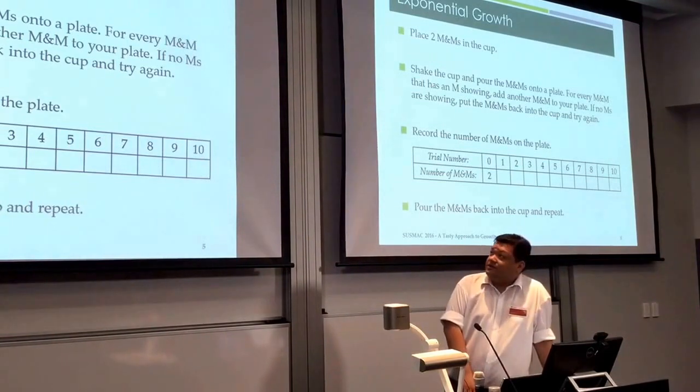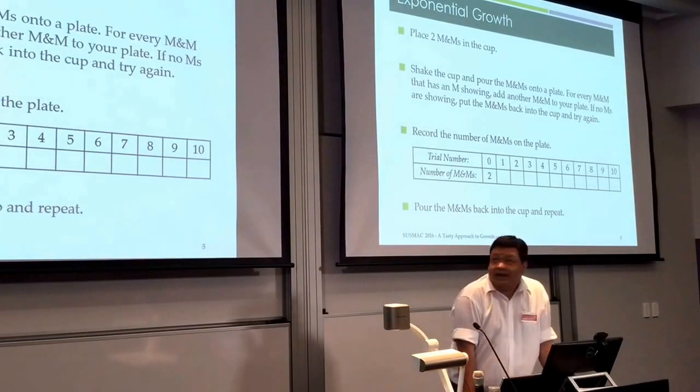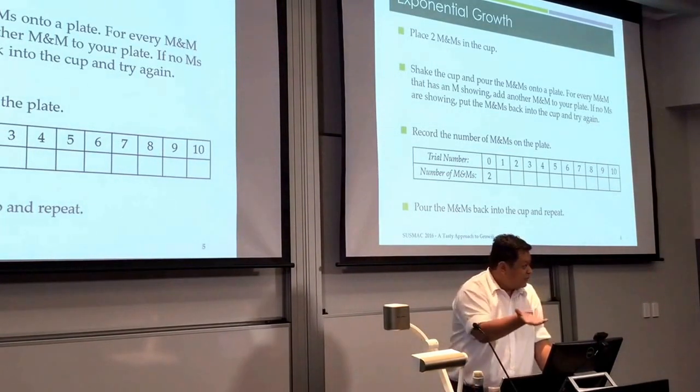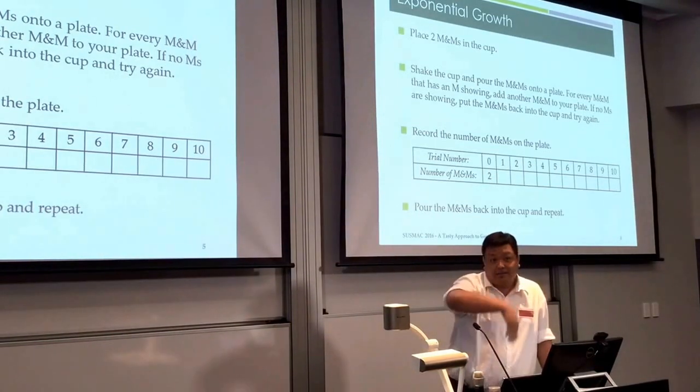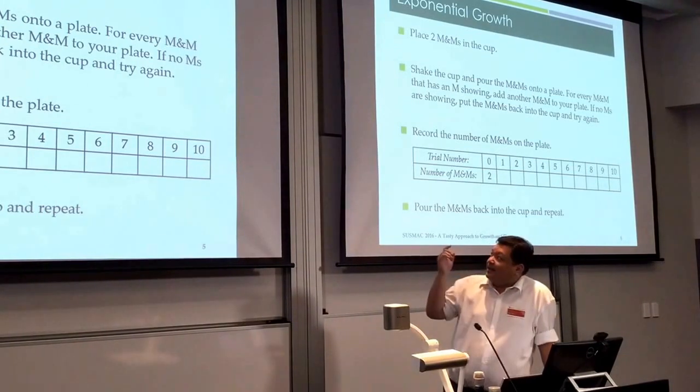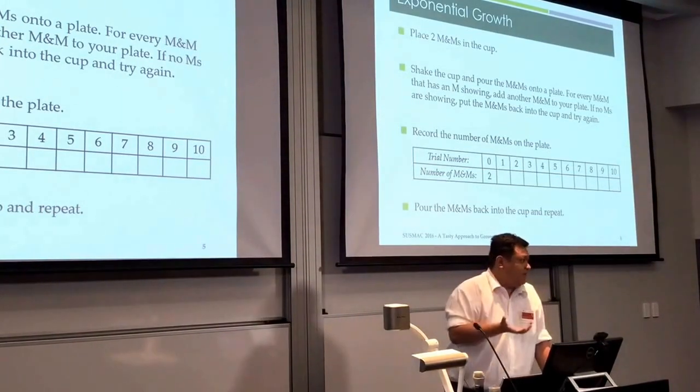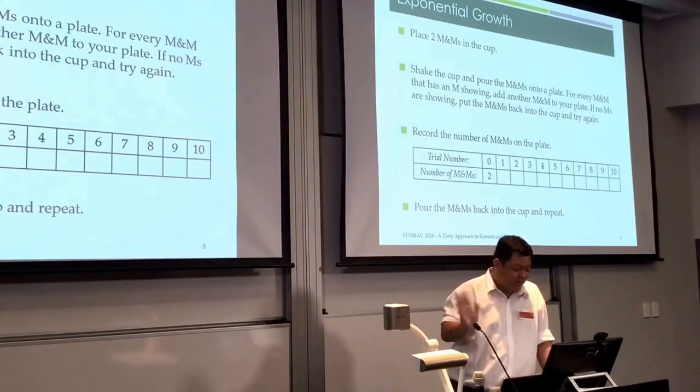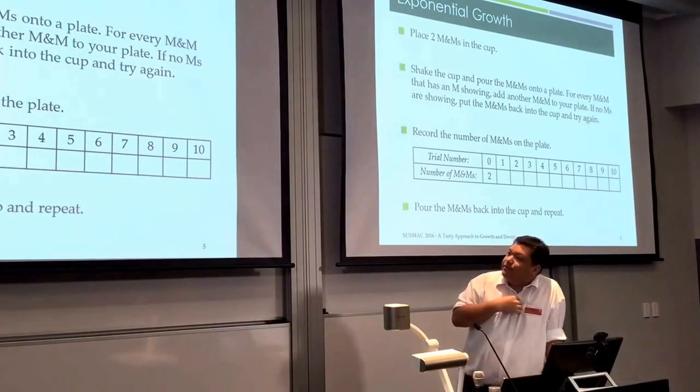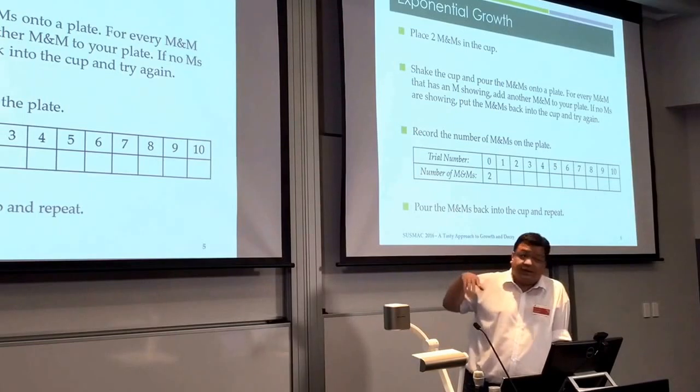Exponential growth, so you start by placing two M&Ms in the cup and you shake the cup and you pour the M&Ms onto a plate. You make note of every M&M that's showing an M and you add an M&M to your plate. If there are no M&Ms showing, put the M&Ms back to the cup and try again just so that there is some sort of growth there. I know I'm fudging a little here. The worksheet will guide you through these steps fairly clearly.